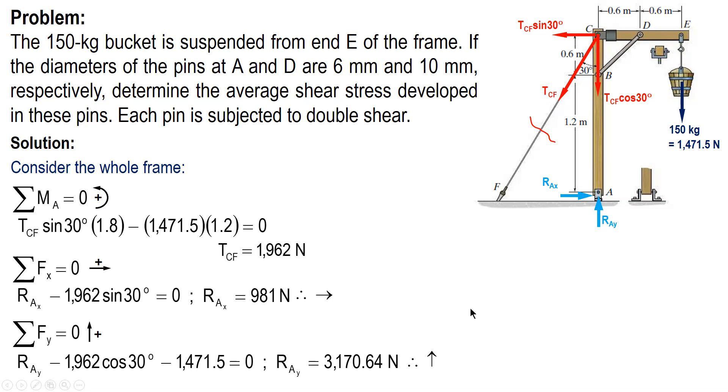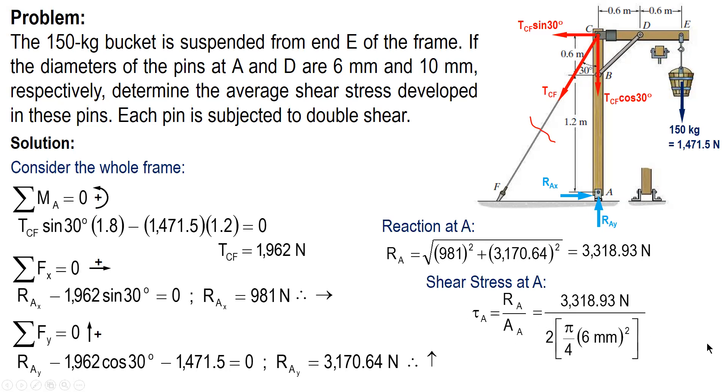And after this, we compute for the magnitude or the resultant using components R-A-X and R-A-Y. So the resultant reaction at A is 3,318.93 newtons. And we already have the value of R and the diameter, which is 6, and it was double shear, we can compute for the average shear stress. So our area is 2 times area of circle, and the stress at A is 58.7 Megapascal.